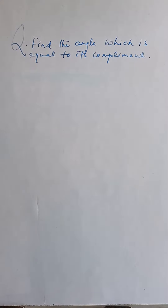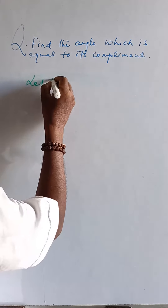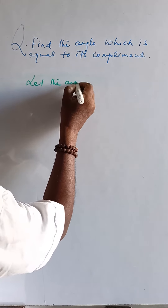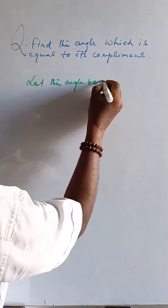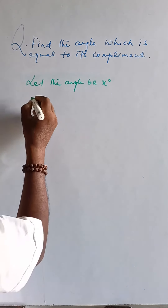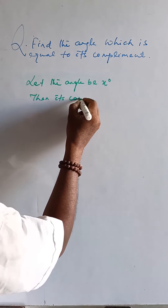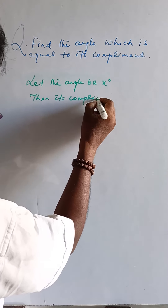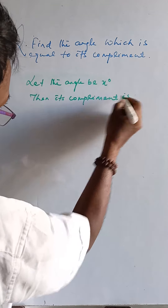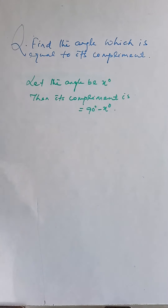Find the angle which is equal to its complement. Let the angle be x degrees. Then its complement is 90 degrees minus x degrees.